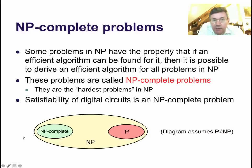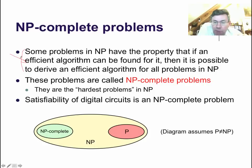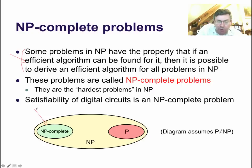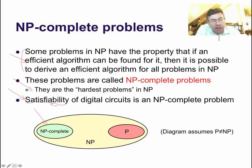We can say a little bit more about this situation. Some of the problems in NP are special — they're not all the same. Some problems are very special because if you have an efficient algorithm for one of these special problems, then you can solve all problems in NP efficiently. These problems are called NP-complete. If you find a polynomial time algorithm for any NP-complete problem, that means all problems in NP have polynomial algorithms, and at that point we will know that P equals NP. The NP-complete problems are, in some sense, the hardest problems in NP — they're really the core. And the satisfiability problem I just described is in fact an NP-complete problem.